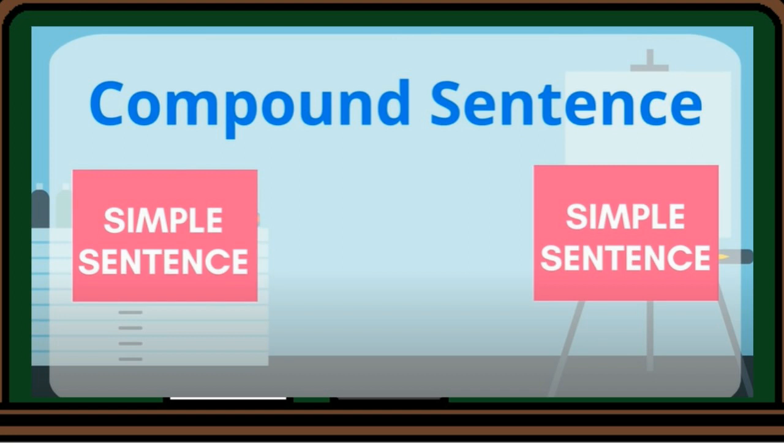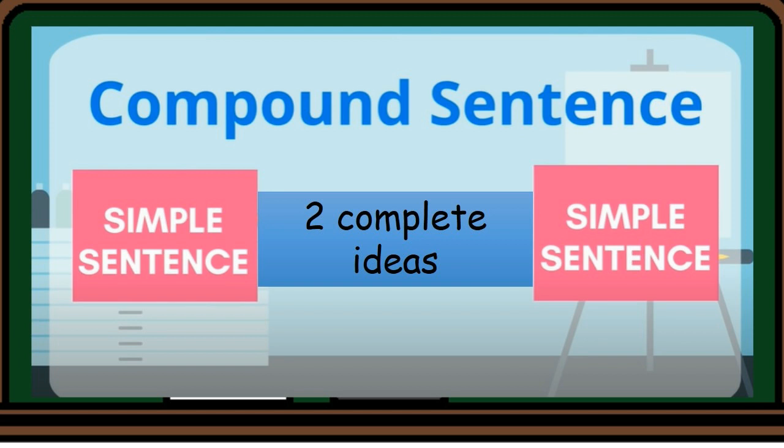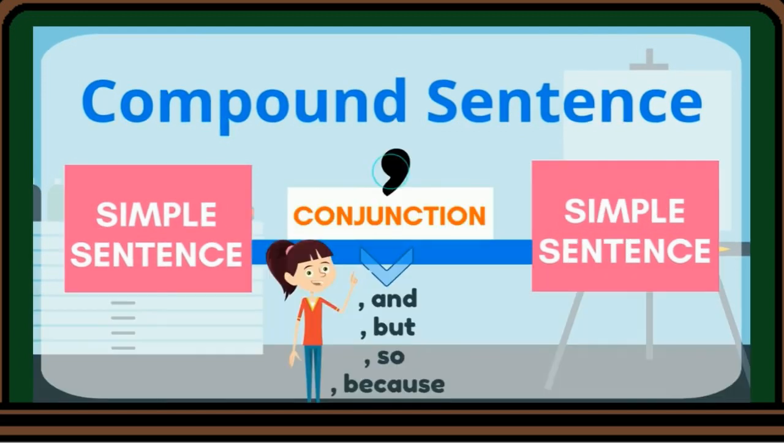Meanwhile, a compound sentence is composed of two simple sentences, and it is connected by a comma and a conjunction. Examples of conjunctions are: and, but, so, or, because.